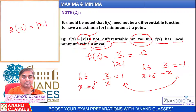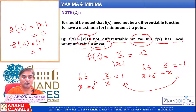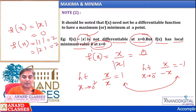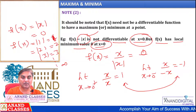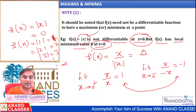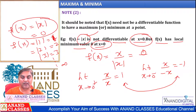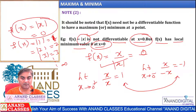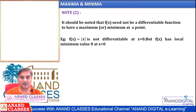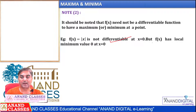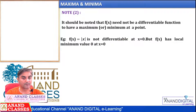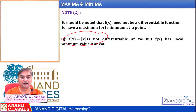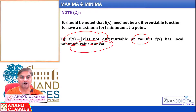What is the minimum value of f(x) = |x|? It is 0. The maximum value does not exist because |1|=1, |2|=2 — it keeps increasing up to infinity. So there is no maximum value, but the minimum value is 0. Even though the derivative does not exist at 0, the function still has a minimum value there. This proves that if a function's derivative doesn't exist, it doesn't mean the function has no maximum or minimum value.